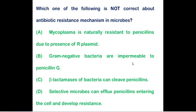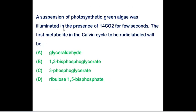Which of the following statements about antibiotic resistance in microbes is not correct? Option A states that Mycoplasma is naturally resistant to penicillin due to the presence of a resistance plasmid — this is not correct. Mycoplasma are naturally resistant to penicillin not because of R-plasmids, but because they lack a cell wall entirely, and penicillin is a cell wall inhibitor. Options B, C, and D are all correct statements. So option A is the incorrect statement.